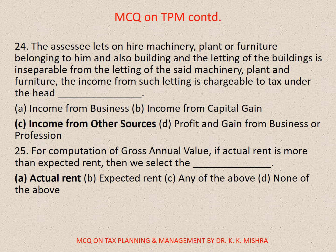Question number 24: The assessee lets out machinery, plant or furniture belonging to him and also a building, and the letting out of the building is inseparable from the letting out of the said machinery, plant and furniture. The income from such letting is chargeable to tax under the head — correct option is C: Income from other sources. Question number 25: For computation of gross annual value, if actual rent is more than expected rent, then we select — correct option is A: Actual rent.